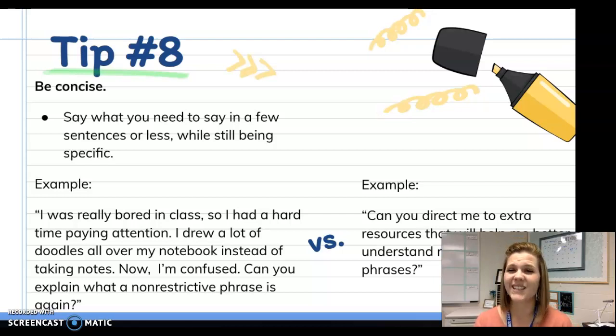Tip number eight is to be concise. Say what you need in a few sentences or less, while still being specific. So, in this slide, I've given you two examples. One example is not concise, and the other is.